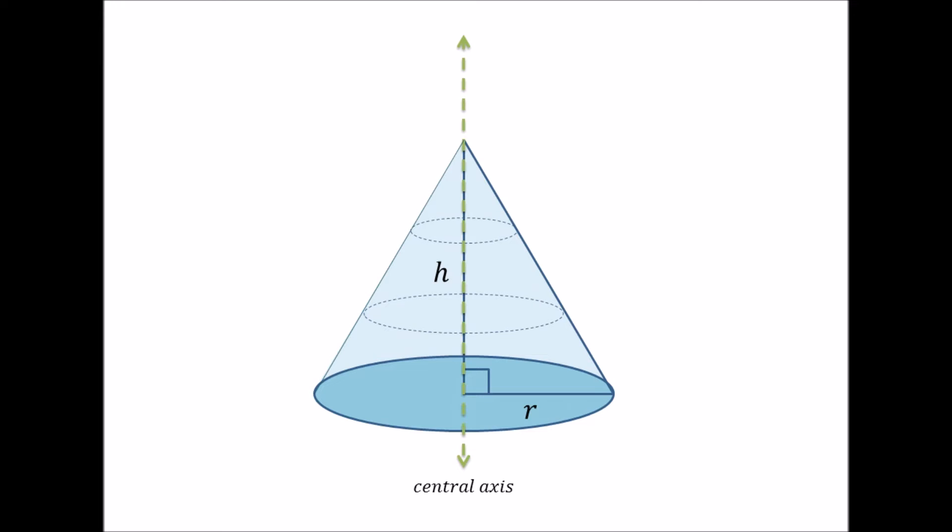And further seeing that any cross section of this cone perpendicular to the central axis is a solid disk and not a ring, we can use the disk method to find its volume.